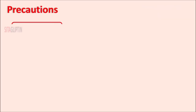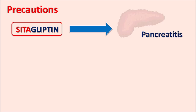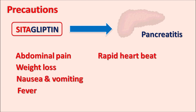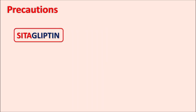An important precaution of cetagliptin is its effect on the pancreas. Since the site of action of incretin hormones is the pancreas, cetagliptin can produce acute pancreatitis. Symptoms to watch for include abdominal pain, sudden weight loss, nausea, vomiting, fever, rapid heartbeat, dehydration, diarrhea, and bleeding problems. If any of these appear, care should be taken to avoid further development of pancreatitis.